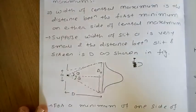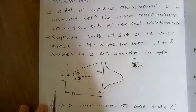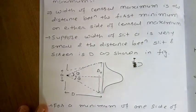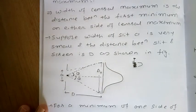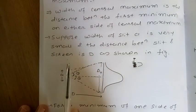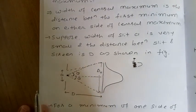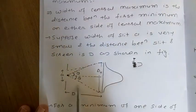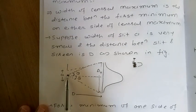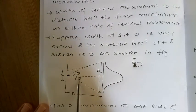Here we have a slit and the width of the slit is very small. The distance between the slit and screen is capital D. The width of the slit is small a. This is the central maximum. Suppose this angle is theta, so this is also theta. Therefore the angular width is theta plus theta, which is 2 theta.